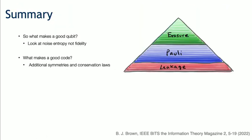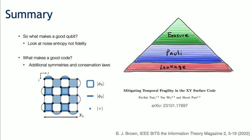In summary: think about the noise structure of your qubits — don't just think about the one number infidelity. When you design codes, think about what error the code is trying to correct, and consider having the right symmetries in the code designed to effectively detect the specific errors. There's nice work from Ben Brown related to symmetries and conservation laws in designing error correction codes. Just yesterday, we had a paper out where we used a similar idea of preserving symmetries to mitigate temporal fragilities in the XY surface code. I'll stop here.